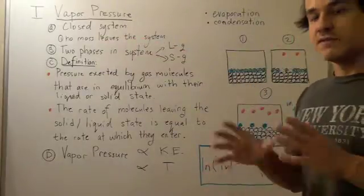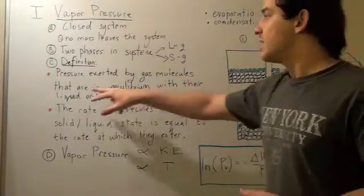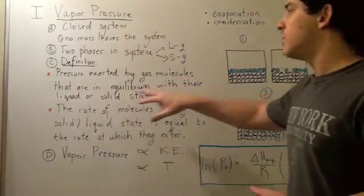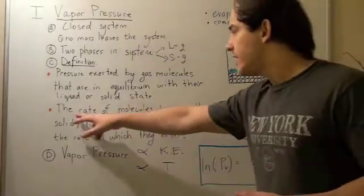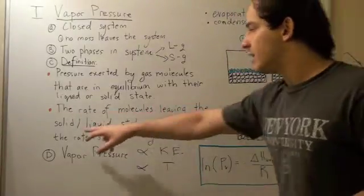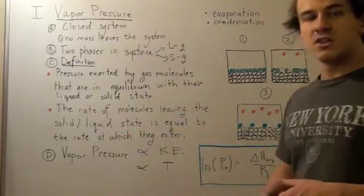Vapor pressure, by definition, is the pressure exerted by gas molecules that are in equilibrium with their liquid or solid state. At this point, the rate of molecules leaving the solid or liquid state is equal to the rate at which they enter that state.